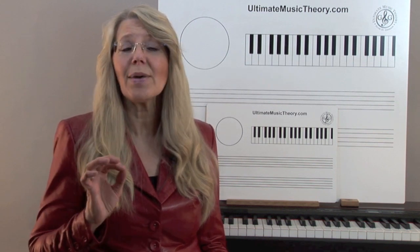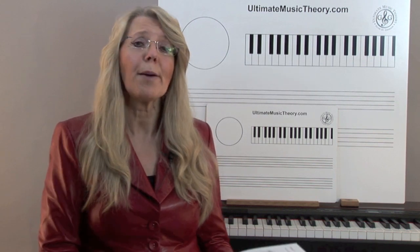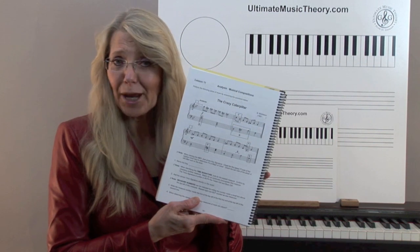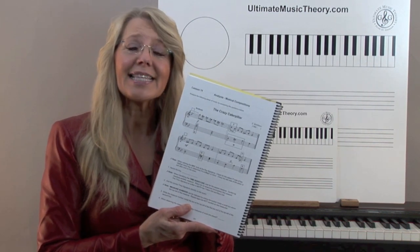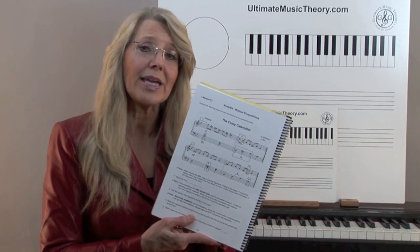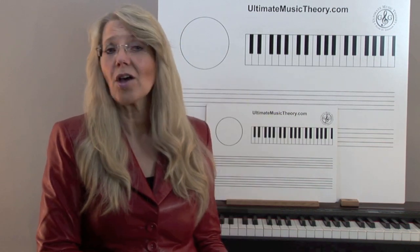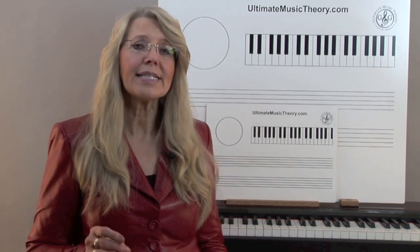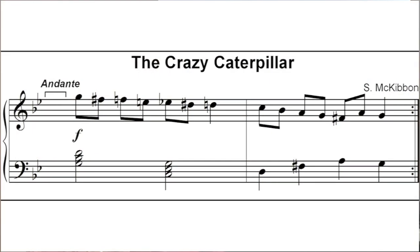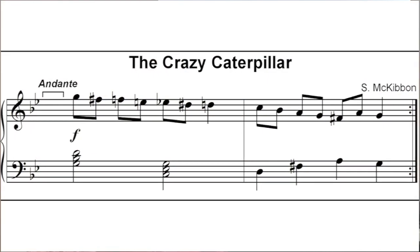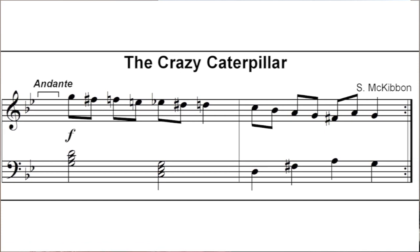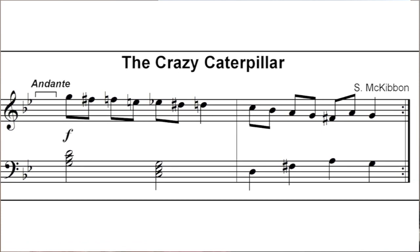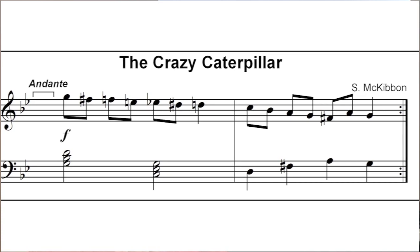You can also teach ear training by using the same analysis questions. For example, using the Crazy Caterpillar from Lesson 11, play the triads in the piece and have your students identify them as major or minor, as well as solid or broken. Play the piece and have students identify the dynamics and the tempo, and then play the piece again — this time, have them clap back the rhythm and identify the time signature. This develops good listening skills.